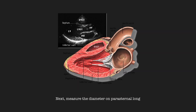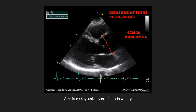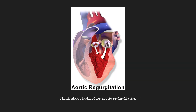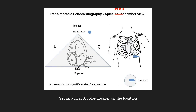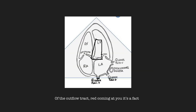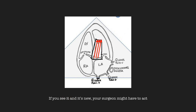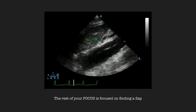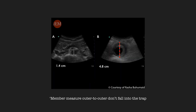Next, measure the diameter on parasternal long. Aortic root greater than four centimeters is wrong. Think about looking for aortic regurgitation — get an apical five-chamber color Doppler on the location of the outflow tract. Red color nature — it's a fact. If you see it and it's new, your surgeon might have to act. The rest of your POCUS is focused on finding the flap. Remember, measure outer to outer — don't fall into the trap.